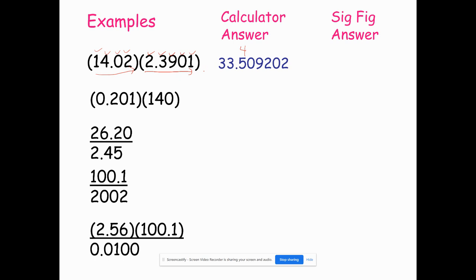So right now there's one, two, three, four — I need to get rid of what's after that. I'm going to look over here to the right of that number, and that's a nine. So that's going to get rounded up to 33.51.